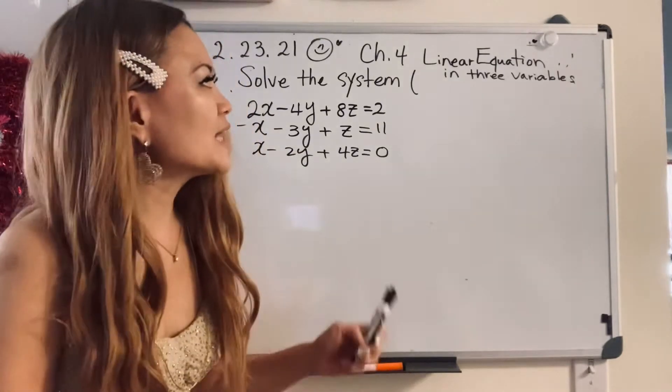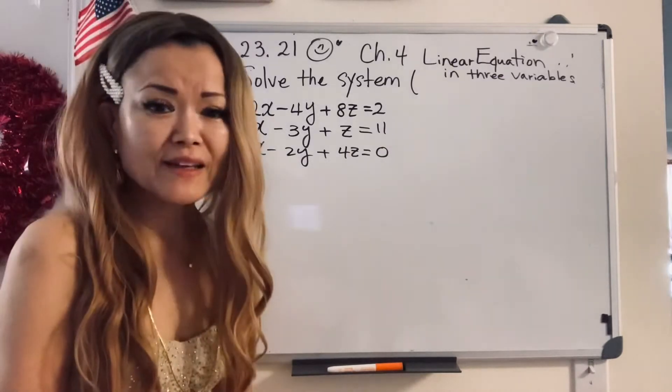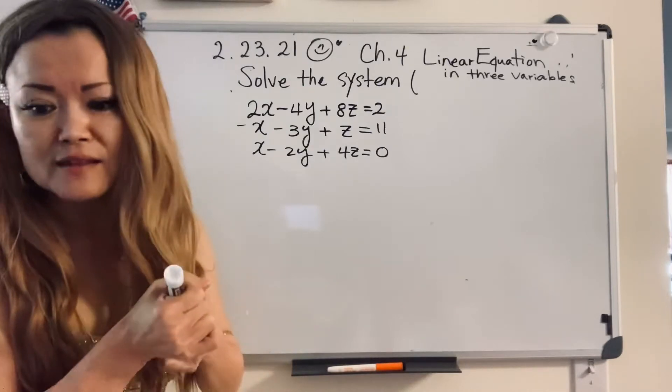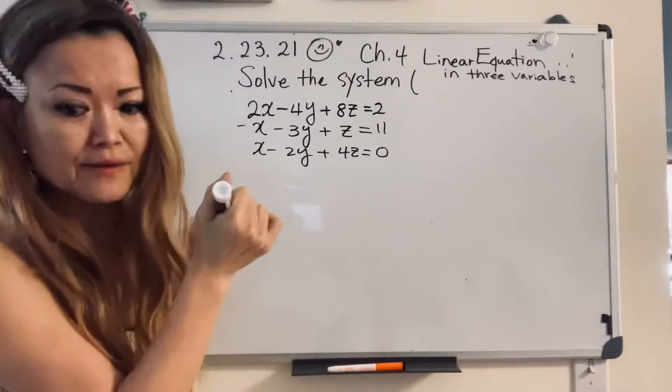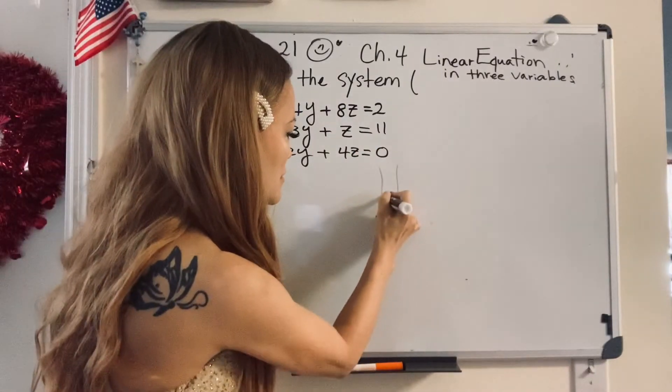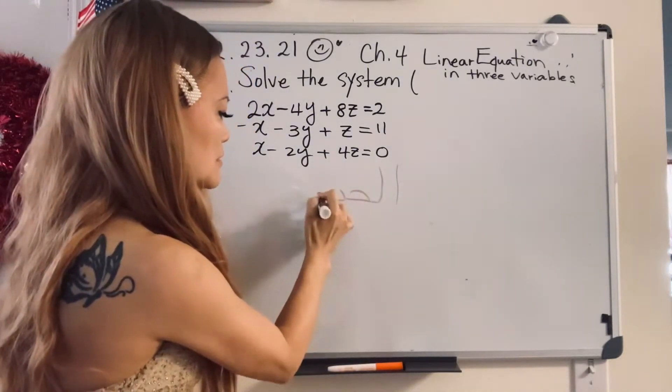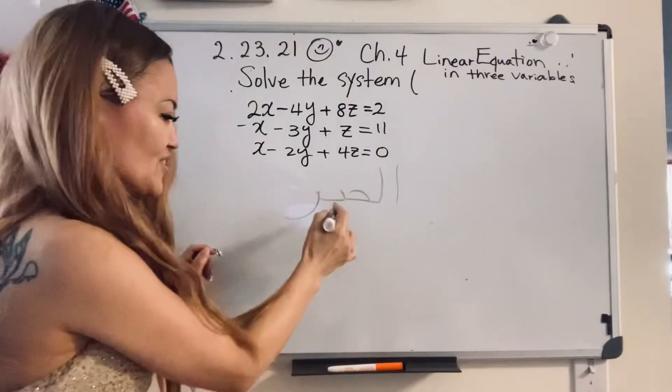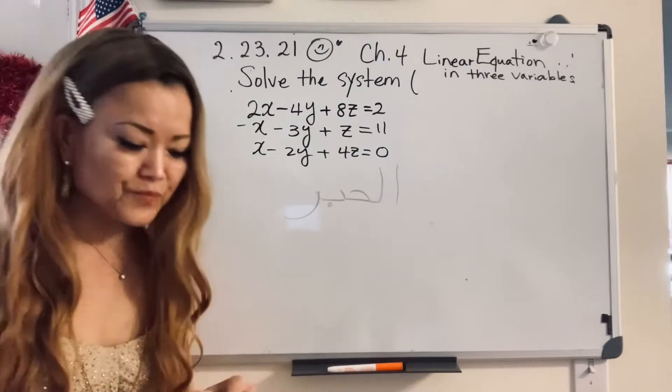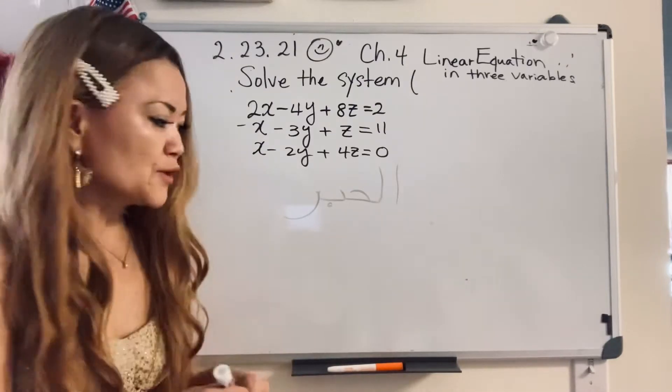This lesson is intermediate algebra, chapter four, linear equation in three variables. You know algebra was derived from the Arabic, right? Arabic words, Al-jab. So it's an Arabic word. This is not really good, but just good to know.